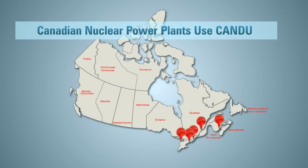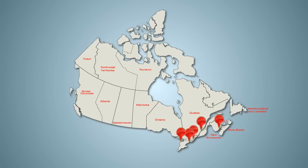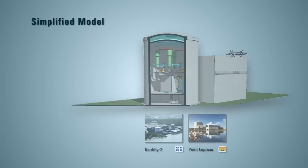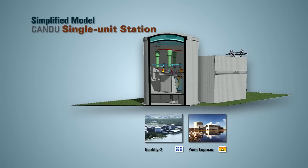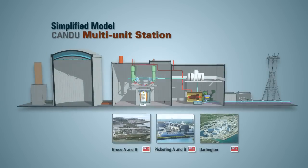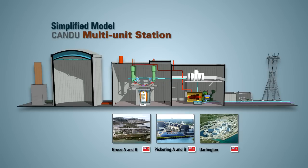All nuclear power plants in Canada use CANDU reactors, a safe, reliable reactor design that has multiple safety systems to minimize the likelihood of an accident and, in the event that an accident occurs, minimize its consequences.